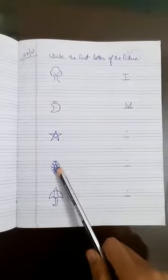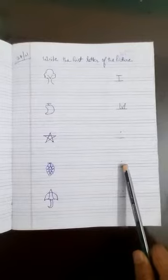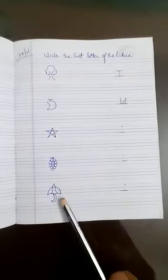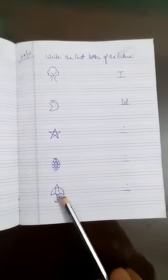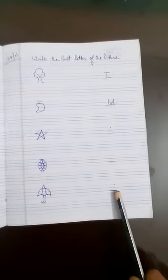Next is Grapes. G, Grapes. So write here G. And next is Umbrella. U, Umbrella. So write here U.